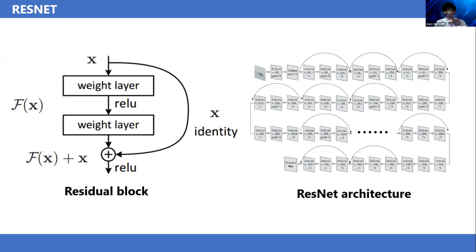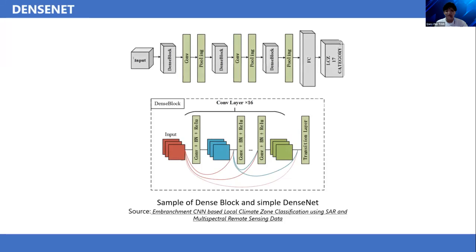Now with DenseNet, we have a module to use in convolutional neural networks that connects all layers with matching feature map sizes. To preserve the feedforward nature, each layer obtains additional input from all preceding layers and passes on its feature maps to all subsequent layers. In contrast with ResNet, we never combine features through summation before passing them into the layer. Instead, we combine features by concatenating them. You can see the dense block and sample DenseNet.